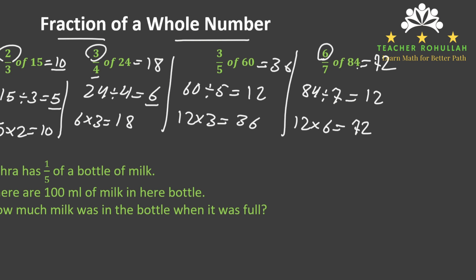In the last example, we have a word problem. In this word problem, it says Zahra has one-fifth of a bottle of milk. There are 100 ml of milk in her bottle. How much milk was in the bottle when it was full? This means one-fifth of something is equal to 100 ml.